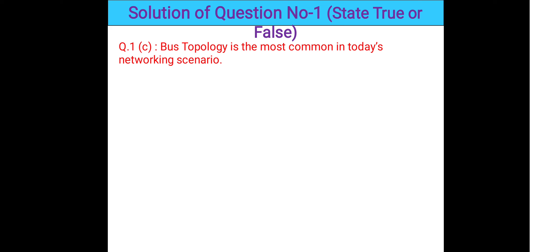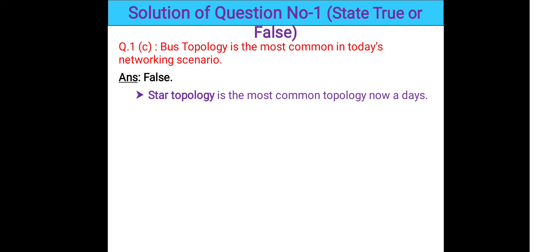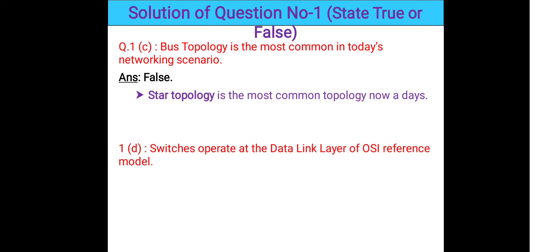Question 1c: Bus topology is the most common in today's networking scenario. This statement is false, because star topology is the most common topology nowadays due to its simplicity. Question 1d: Switches operate at the data link layer of the OSI reference model. This statement is true — switches operate at the data link layer of the OSI reference model.